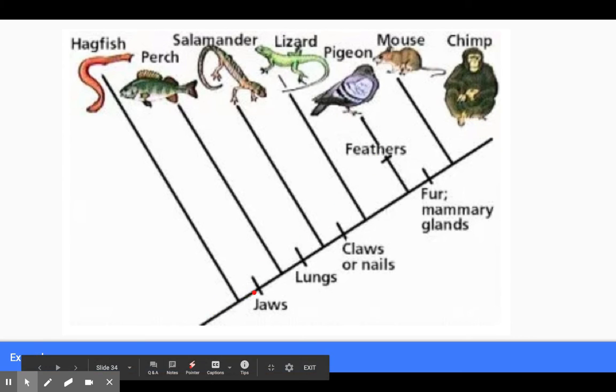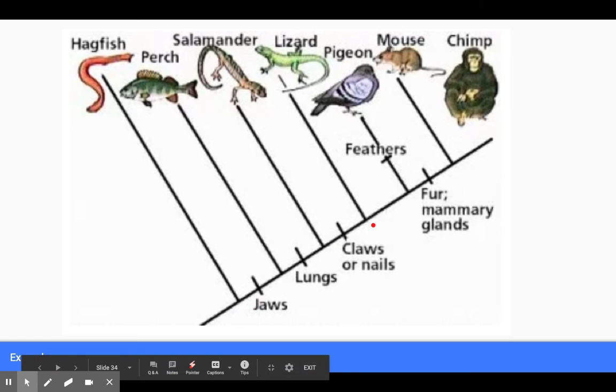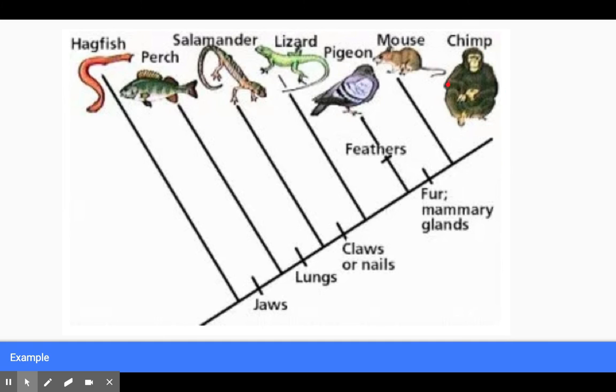So as we keep going, let's say we want to talk about our lizards. So we'll go down our highway. We have jaws, lungs, claws, or nails. And lizards do not have fur, so that's why they're right here, okay? If we go up to our chimp, our chimp has all of these traits, which is why it is all the way up here. It's also the most recent to become a species compared to these other ones.